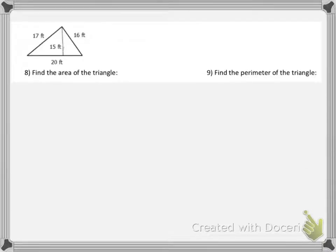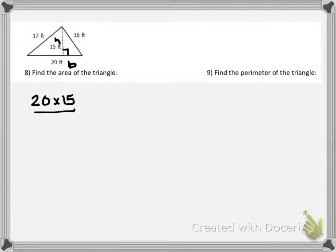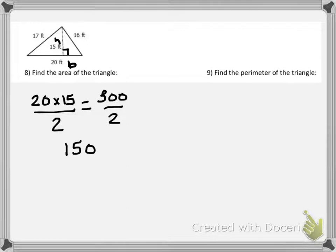Let's take a look at question number 8. We want to find the area and the perimeter of the triangle. To find the area we need to know the base and the height, and they should be perpendicular to each other. The base here is 20 and the height is 15. So we're going to multiply 20 times 15 and then divide by 2. 20 times 15 is 300, and 300 divided by 2 is 150. So the area is 150 feet squared.